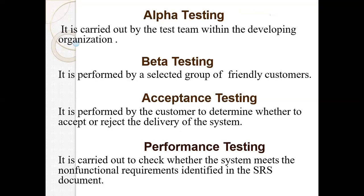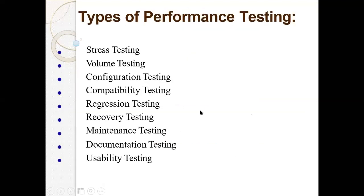The software specification states what will be stored in code, memory, and the system. The types of performance testing include: stress testing, volume testing, configuration testing, compatibility testing, regression testing, recovery testing, maintenance testing, documentation testing, and usability testing.